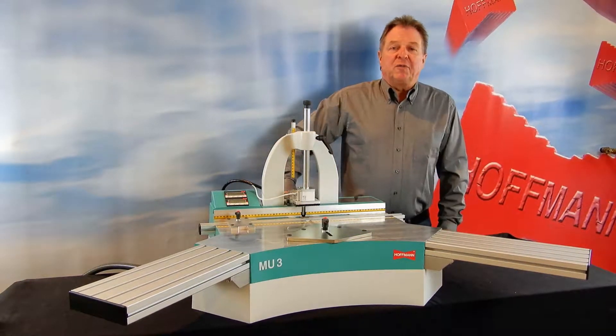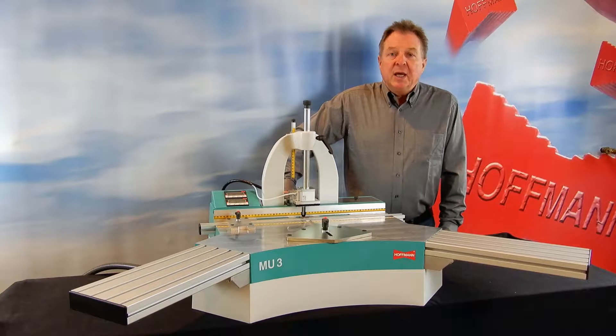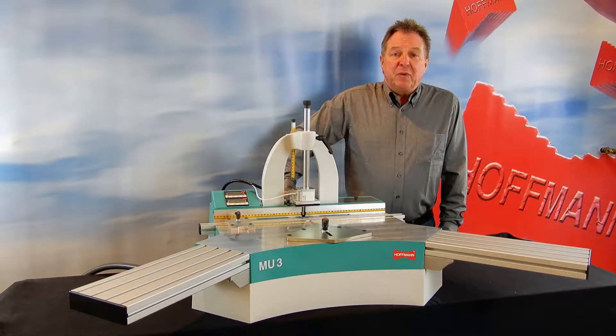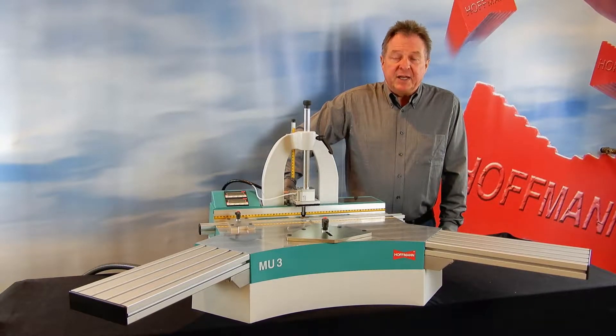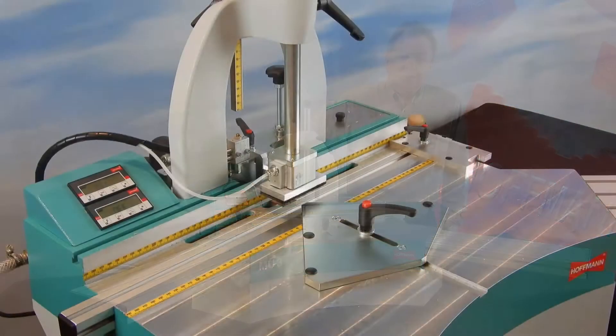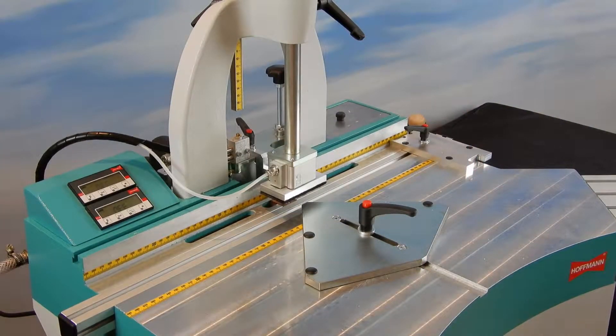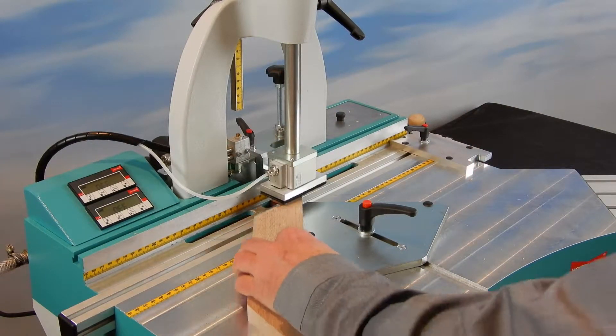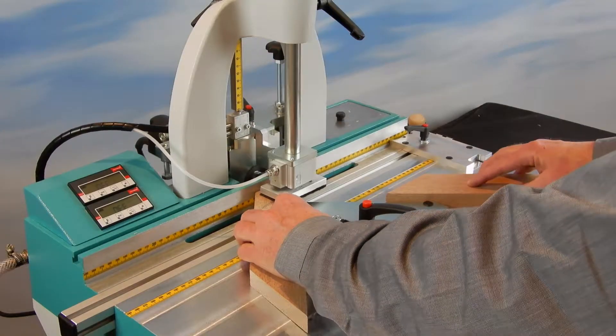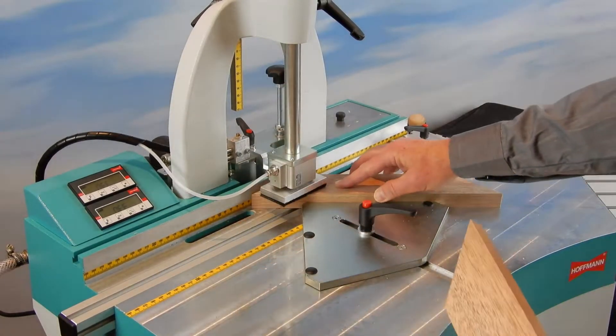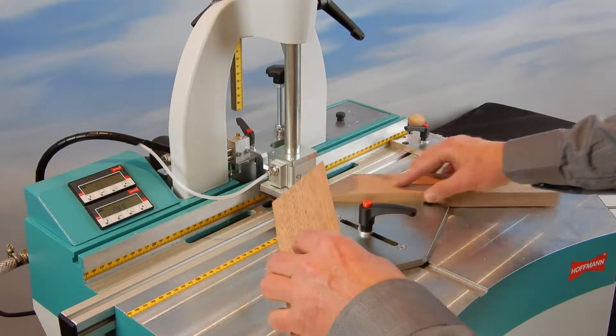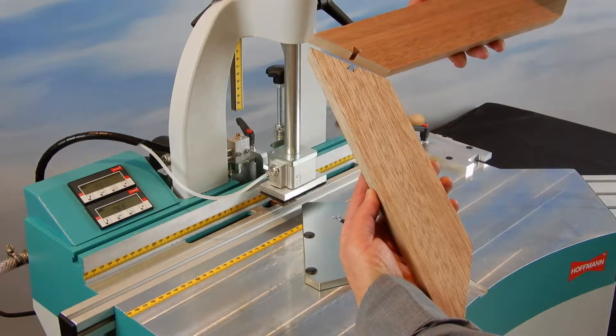Hi, my name is Thomas Hoffman with Hoffman Machine Company, and this is our MU3P pneumatic dovetail routing machine. It is equipped with a carbide dovetail bit installed in a router motor. My material is being pressed onto the table and the router bit moves up and cuts the dovetail keyway into the end of my molding.